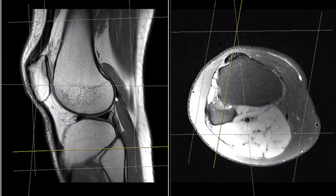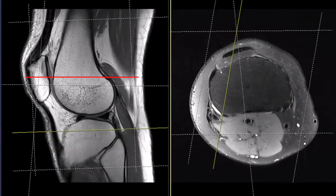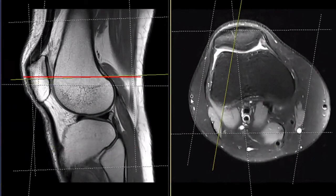In the sagittal views, I like to see the full profile of the lateral femoral condyle. We define the posterior femoral condyle line, which is represented here by the red line, as a horizontal line which is just above the cartilage of the posterior femoral condyle. The next step is to bring the yellow cutline on the sagittal views to the level of the posterior femoral condyle line.